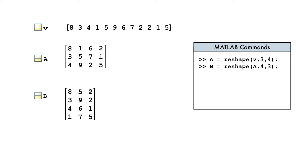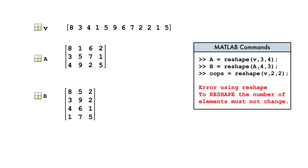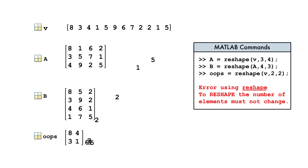Perhaps you've noticed that all three variables have the same number of entries: 12. If we try to reshape an array into another array with a different number of elements, we get an error reminding us that the number of elements must not change.